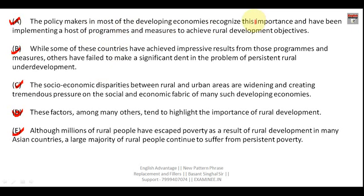For example, you can see the word 'this importance' here — 'this' is a pronoun, so this sentence cannot become the first sentence. The first thing in any para jumble is to figure out the title sentence, i.e., the first sentence. Any sentence containing a pronoun such as this, that, these, those, such, he, she, or it cannot be the first sentence, because it refers back to a previous sentence.